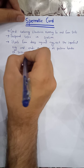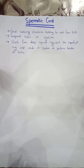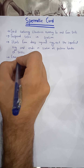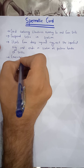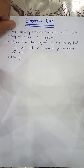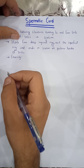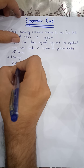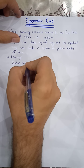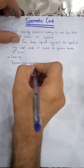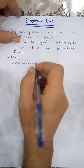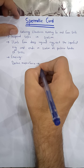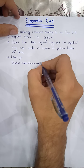The important point is the coverings of the spermatic cord. From the outside moving inward: after the skin, we have the dartos muscle, and then the external spermatic fascia.